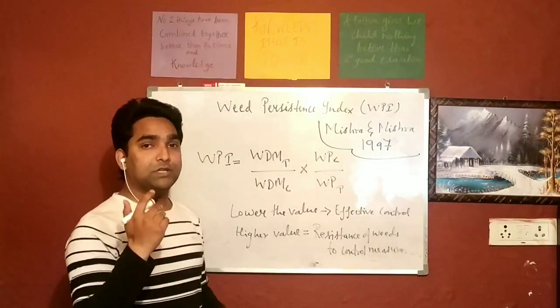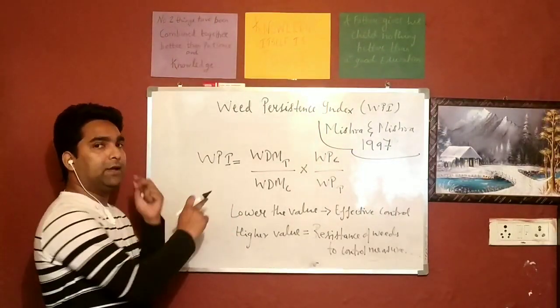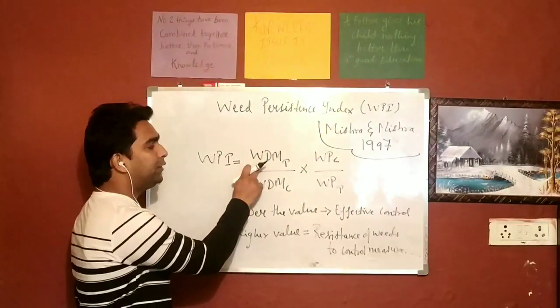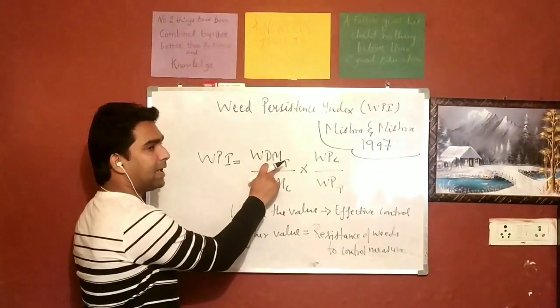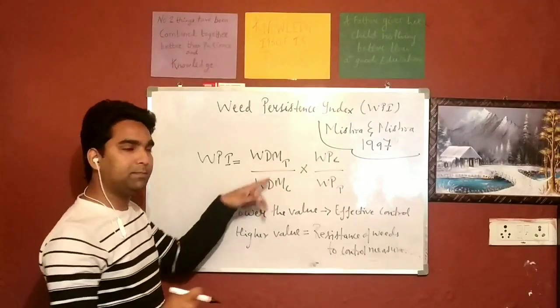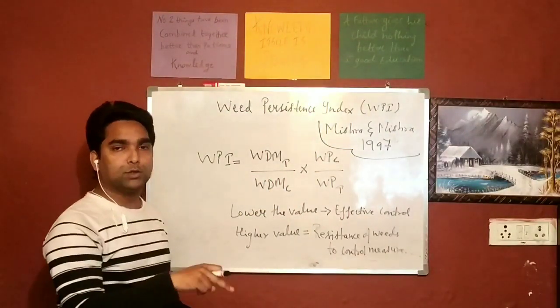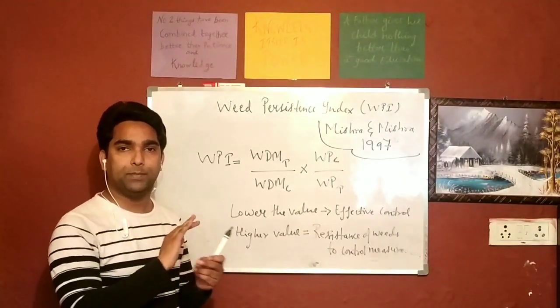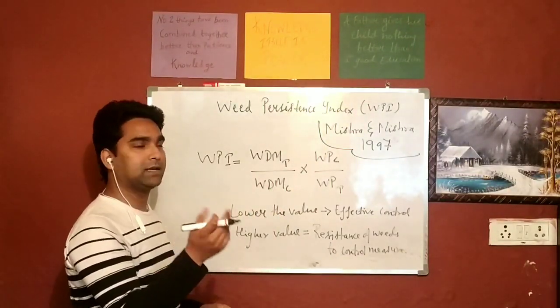So now what is the formula? Always remember this WPI, weed persistence index, is equal to weed dry matter in the treated plot, WDMT, divided by weed dry matter in the control plot. So here the control plot is your weed check. So weed is the reference here.